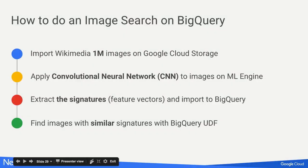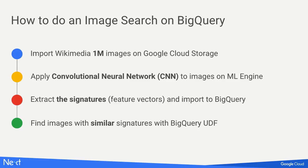So how do you do this? First, we imported all 1 million images from Wikimedia into Google Cloud Storage. Then we used the Machine Learning Engine — ML Engine — to train the convolutional neural networks.